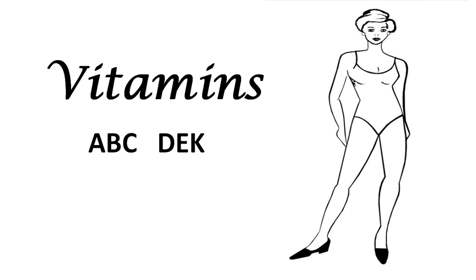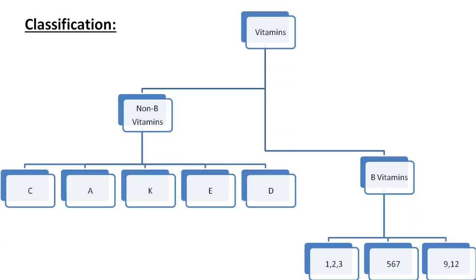Starting with classification: how do we classify vitamins? We can classify them as non-B vitamins and B vitamins. The non-B vitamins include C, A, K, E, and D — remembered as 'CAKED' — and B vitamins include B1, B2, B3, B5, B6, B7, B9, and B12.